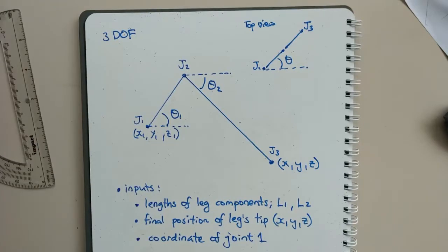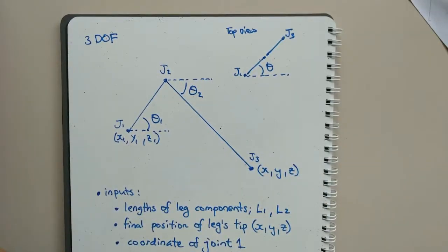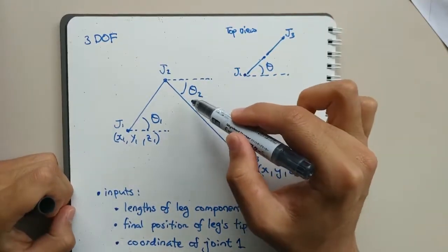In this video, I will explain how to solve inverse kinematics for a single leg that has three degrees of freedom. Inverse kinematics is used to control the robot by finding the angles at different joints.